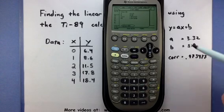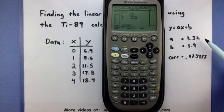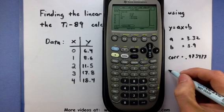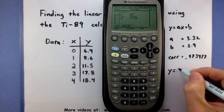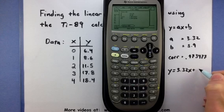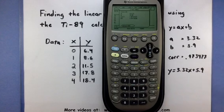So the way we want to interpret this data is the A and B becomes the slope and the Y intercept of the line. So it's basically built this equation, Y equals 3.32X plus 5.9. Just like that. And so this is the linear regression line we are looking for.